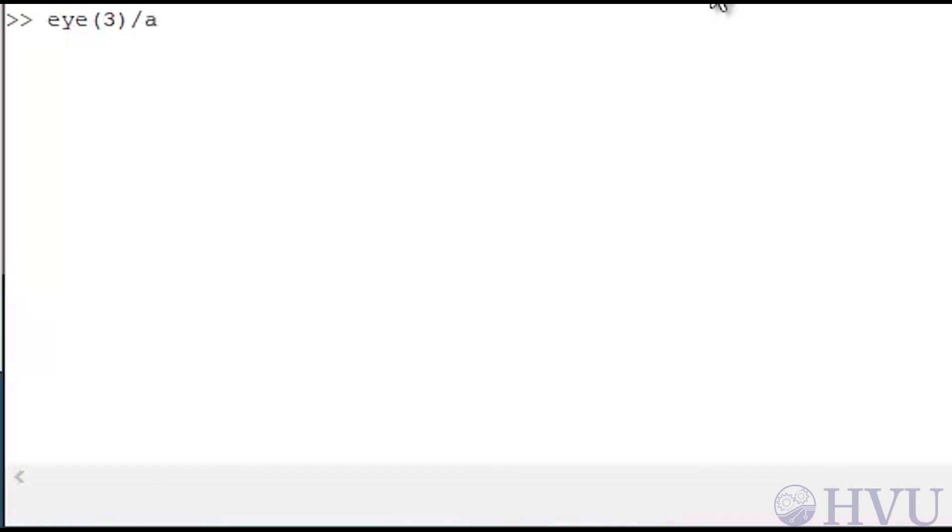Dividing the identity matrix by A using the forward slash operator by typing EYE of 3 slash A gives the same answer.